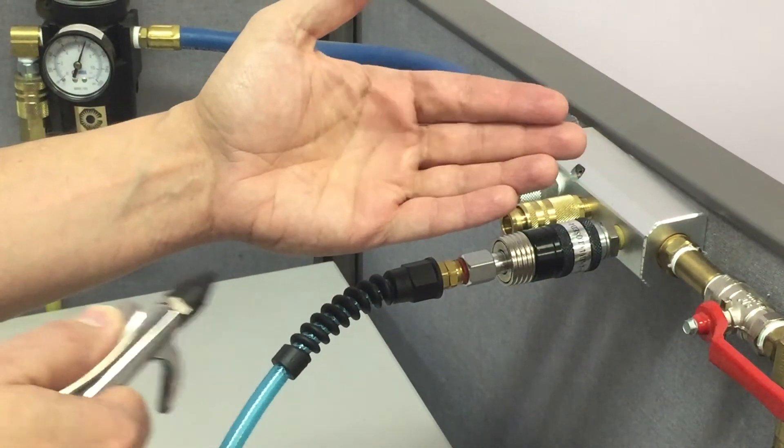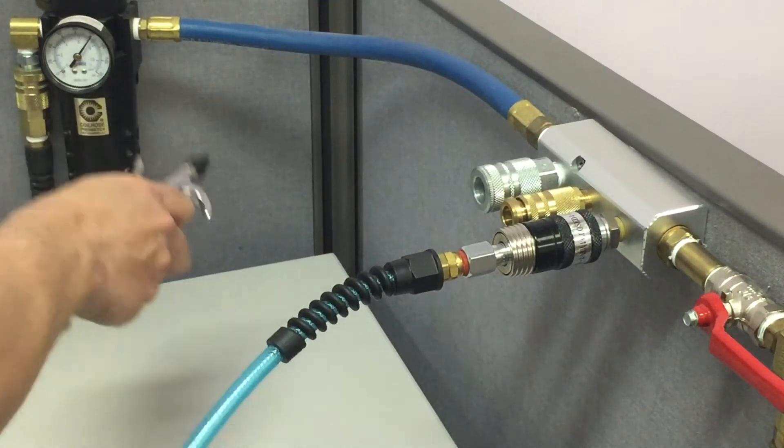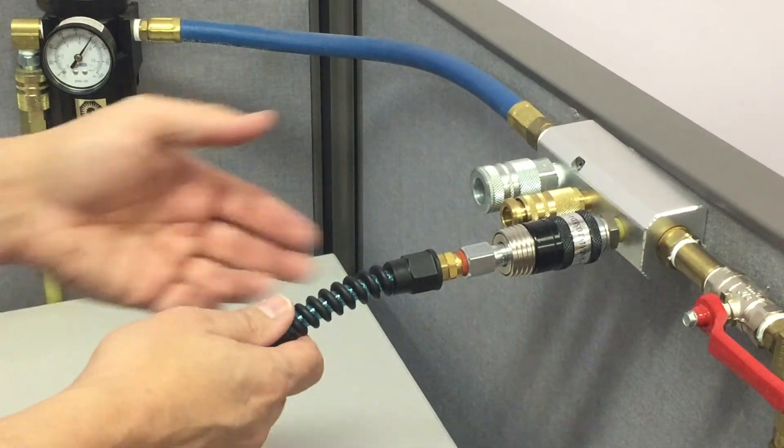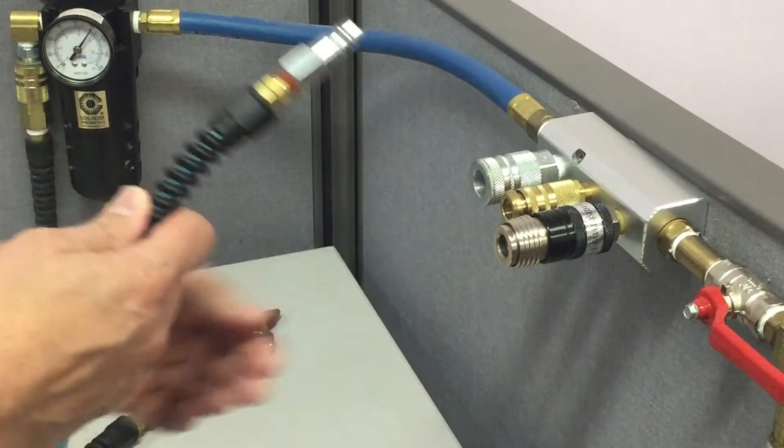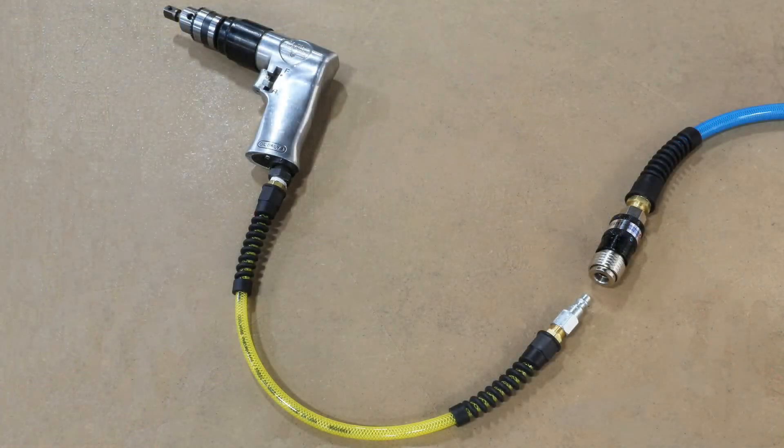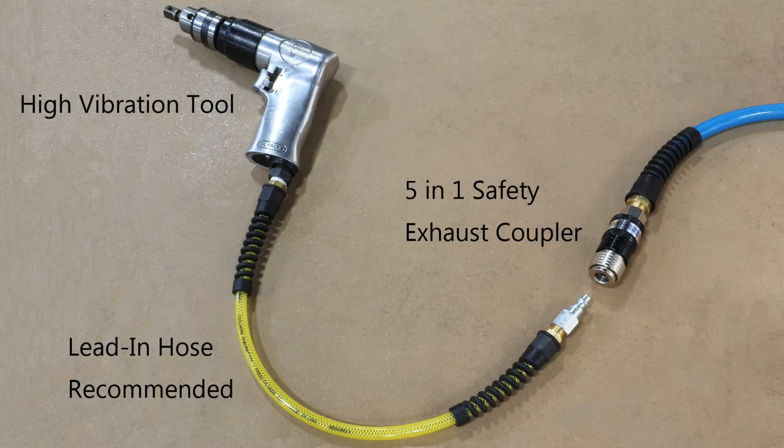To disconnect, the black sleeve is pushed up to stop airflow and safely vent the downstream pressure. The silver ring is then pushed up to fully disconnect. For high vibration applications, we strongly recommend the use of a lead-in hose to lengthen the life of the coupler.